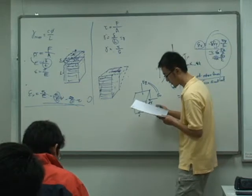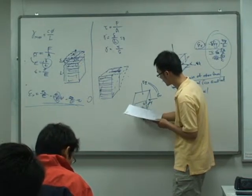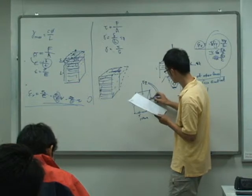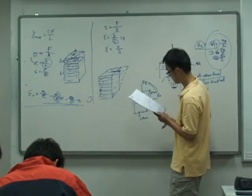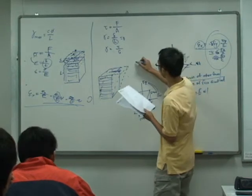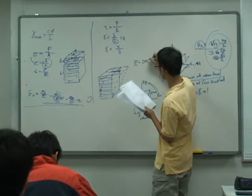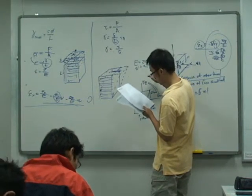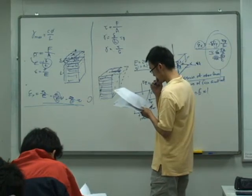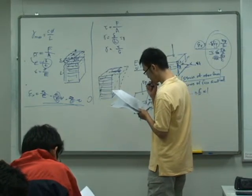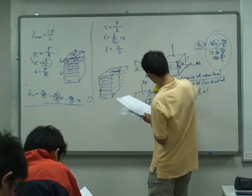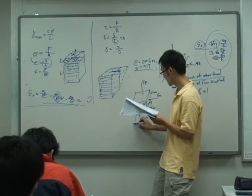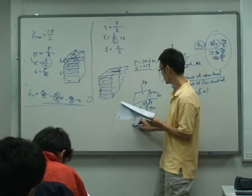Still using the same diagram over here. If the length in the x direction is 100mm, in the y direction is 70mm, in the z direction is 50mm. What I know is the modulus of elasticity is 200 GPa and the Poisson's ratio is 0.29. And for this object, it is loaded by compressive stress in three directions.